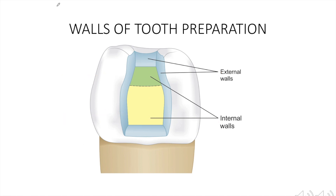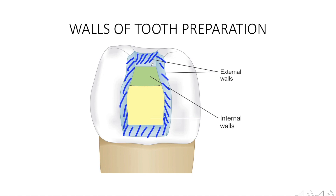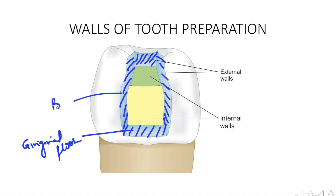The external wall is the wall in the prepared tooth which extends to the external tooth surface. These walls are named according to the tooth surface towards which they are extending. For example, if it is extending towards the gingival side, it is the gingival floor. If extending towards the buccal side, it is the buccal wall. Others include lingual wall, mesial wall, distal wall, and so on.